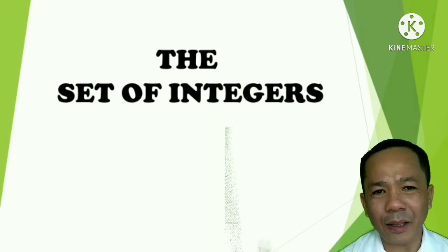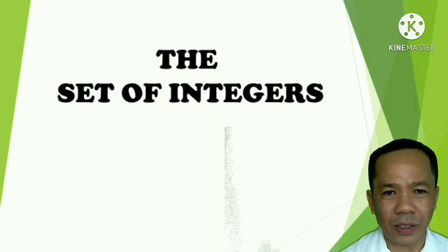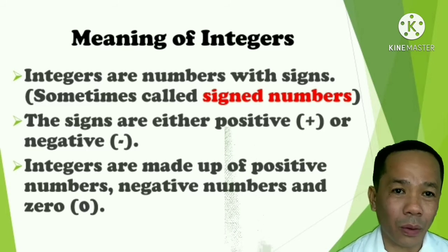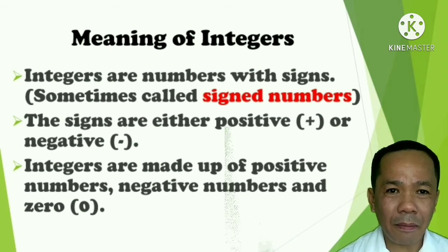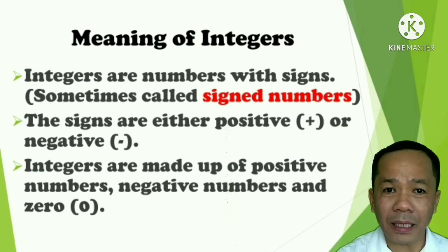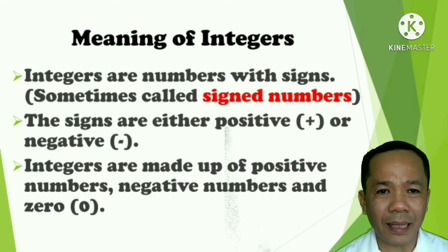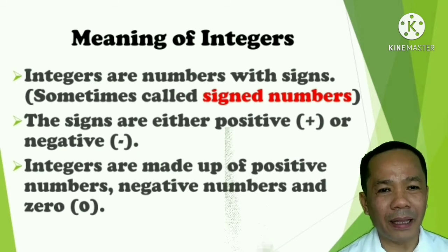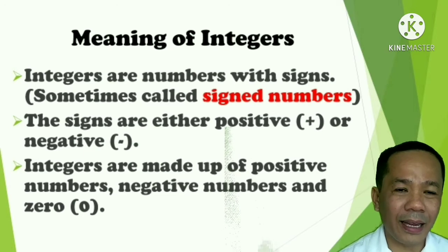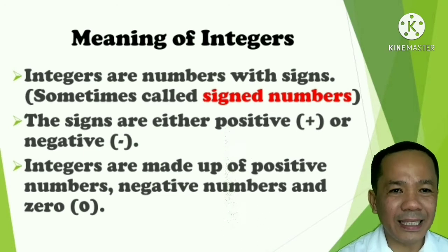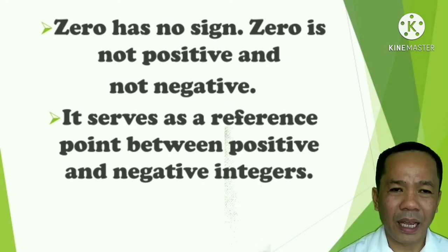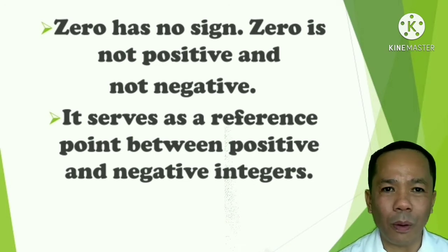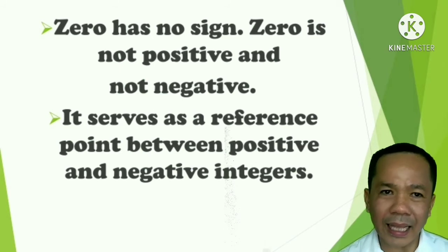Now, let's talk about the set of integers. Let us define what integers are. Integers are numbers with signs, so it is sometimes called signed numbers. The signs may be positive, represented by the plus sign, or negative, represented by the minus sign. Therefore, integers are made up of the positive numbers and the negative numbers, including zero. Zero has no sign. It is not positive and not negative. It only serves as a reference point between the positive and the negative integers.